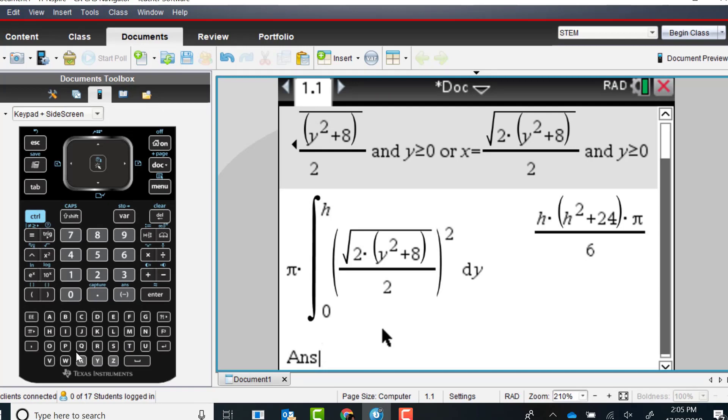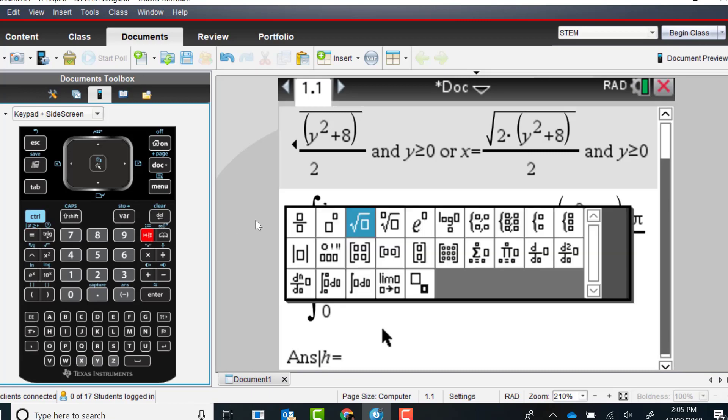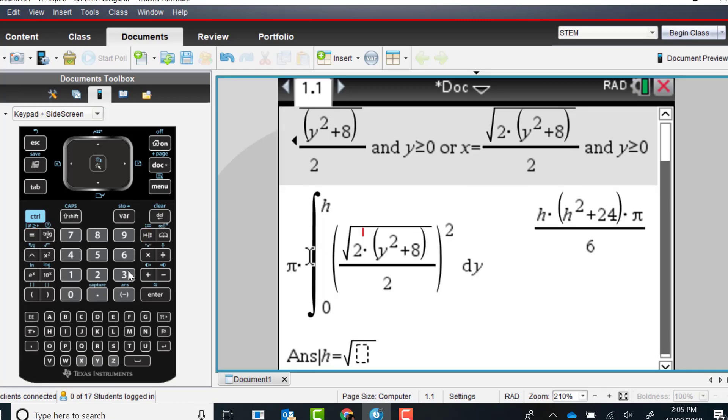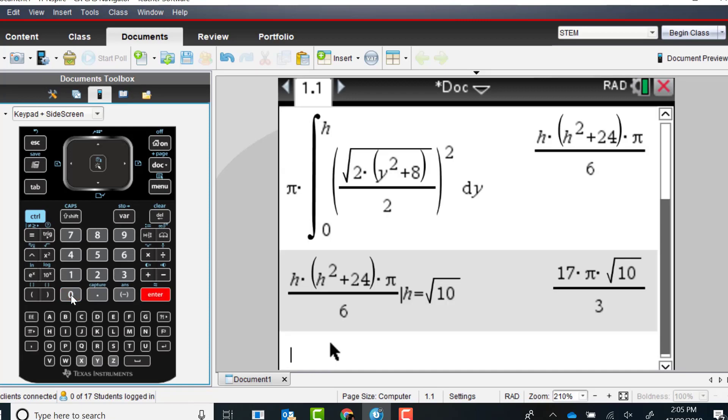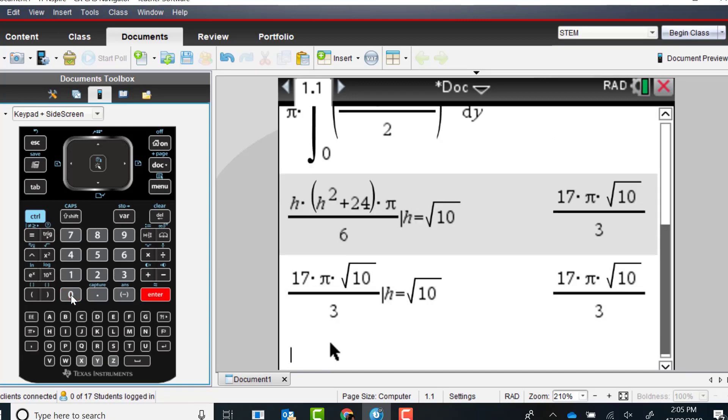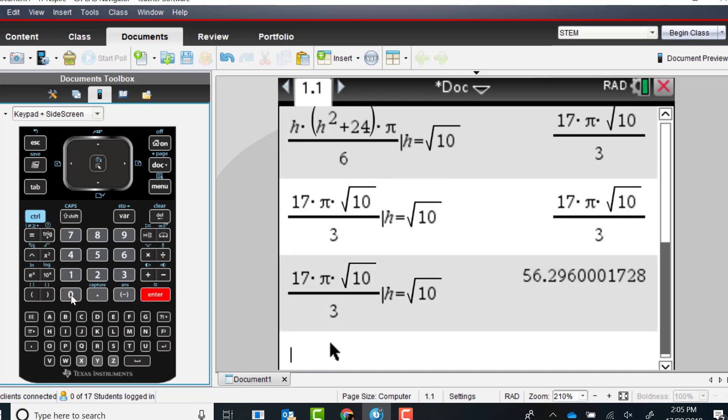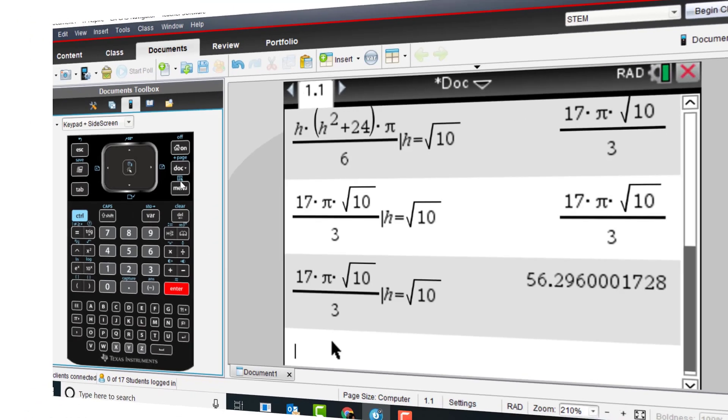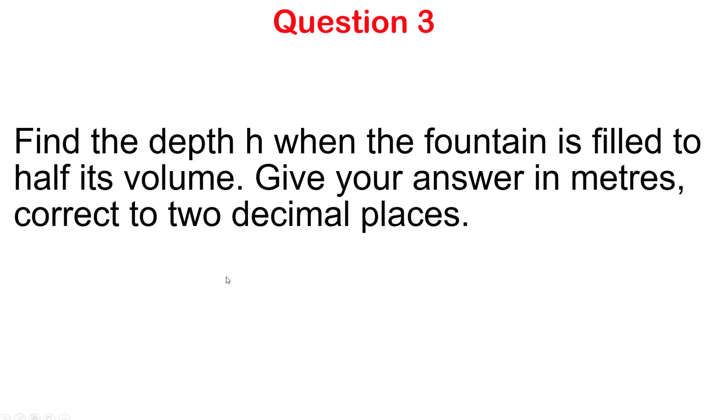I'm going to substitute in my last answer the value of h equals root 10. That's the conditional line, the vertical line, and I'll put h equals root 10. This will give me the answer in exact form: 17 pi root 10 over 3. If I do ctrl-enter it approximates to 56.29.